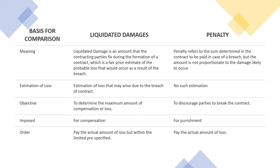In the comparison chart, the meaning of liquidated damages is the amount that the contracting parties fix during the formation of a contract, which is a fair pre-estimate of the probable loss that would occur as a result of the breach. The meaning of penalty is the sum determined in the contract to be paid in case of a breach, but the amount is not proportionate to the damage likely to occur.